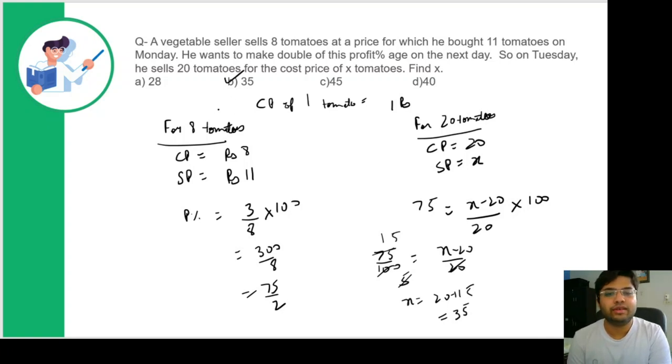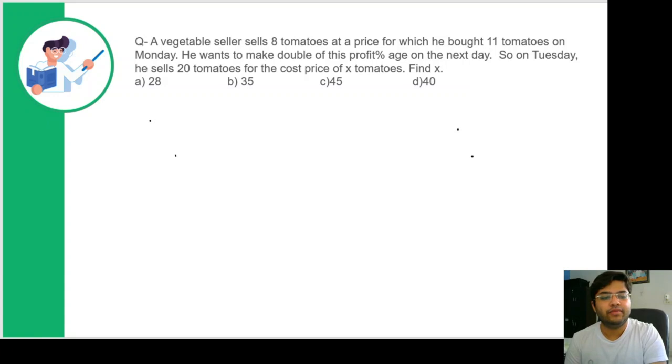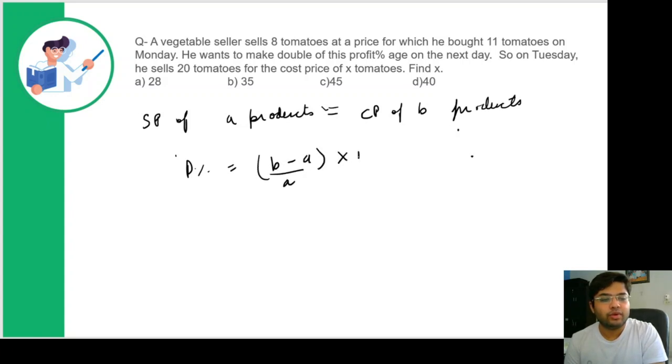But to solve such questions there is a simpler trick you can apply. This shortcut technique says if SP of A products equals CP of B products, then the profit percentage is (B minus A) upon A into 100. If B minus A is negative, this becomes loss percentage. If it's in this form, you can directly use this formula.